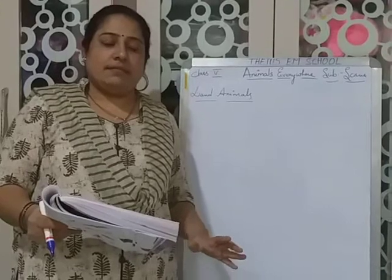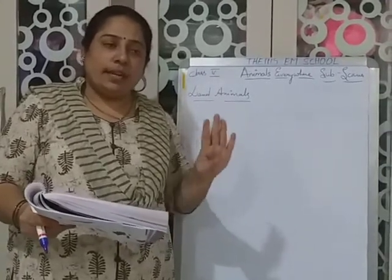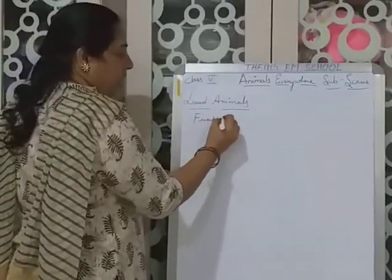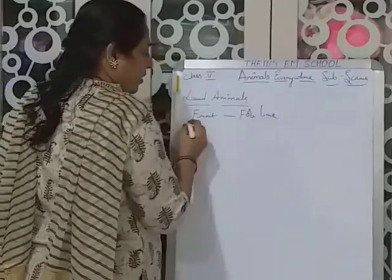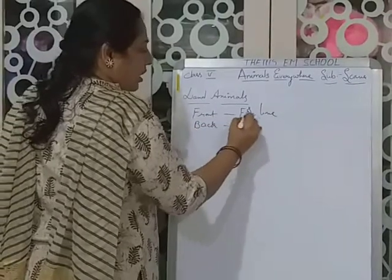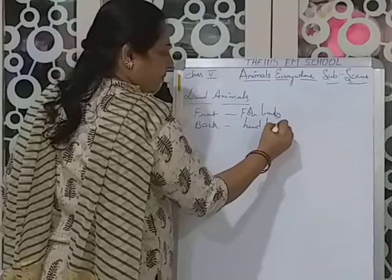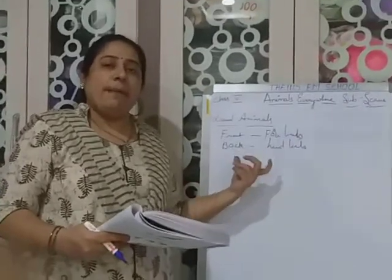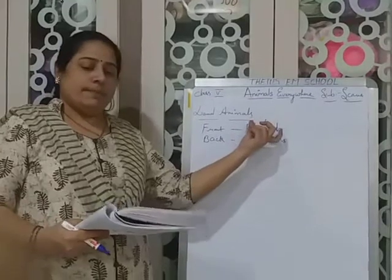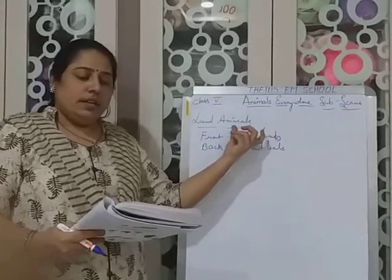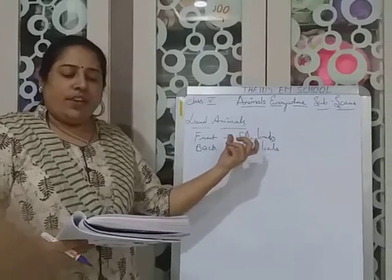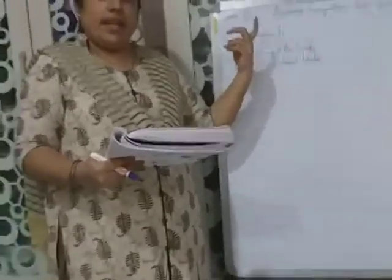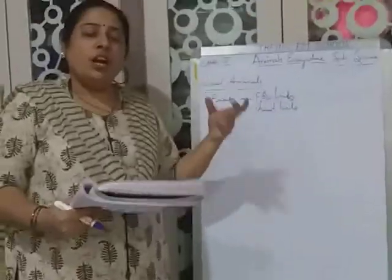So all animals have four limbs — the front two are called forelimbs and the back two are called hind limbs. In land animals, most use both. But in some animals, they use only the hind limbs. Can you name the most famous animal which walks on two legs? Think about which animal walks only on two legs.